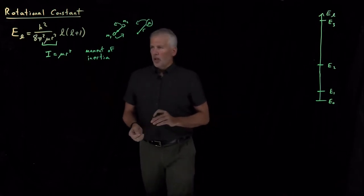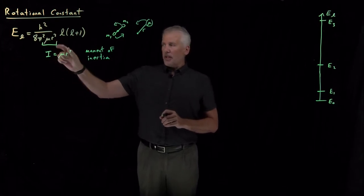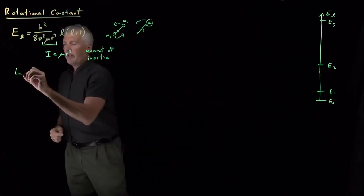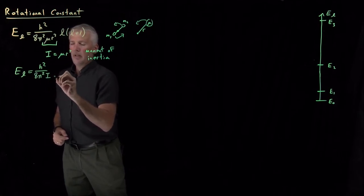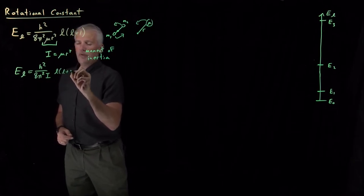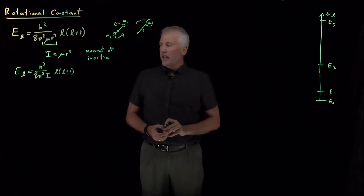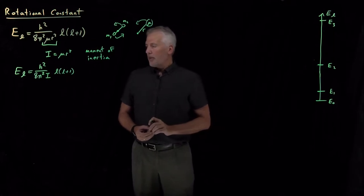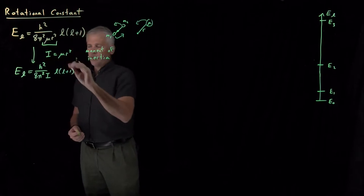Regardless of whether that concept from physics helps you understand this equation or whether you think of it as just a way of cleaning up the notation, we can write the energy levels for a rigid rotor in this form, where we've combined mu r squared into the variable I as a shorthand. Sometimes you'll see these energy levels written in that way. This simplification uses the moment of inertia.